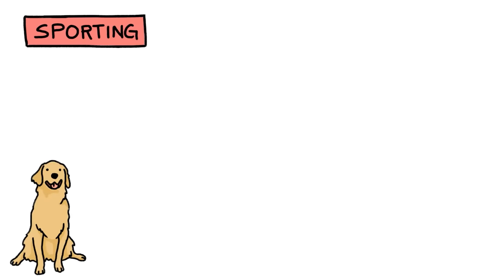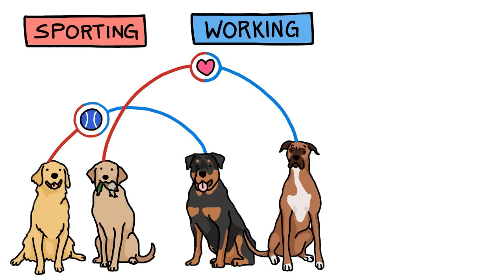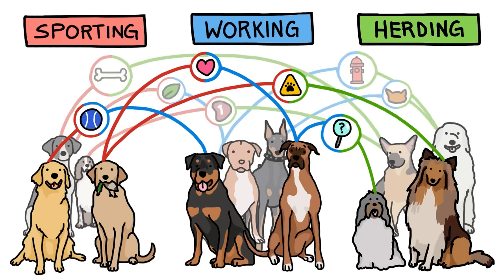Even weirder, it turned out that Golden Retrievers are more similar to Rottweilers than they are to their fellow sporting dogs, and Boxers are more like Labs than they are like other working dogs. In fact, most dogs act more like breeds outside their group than they act like other breeds within their group.